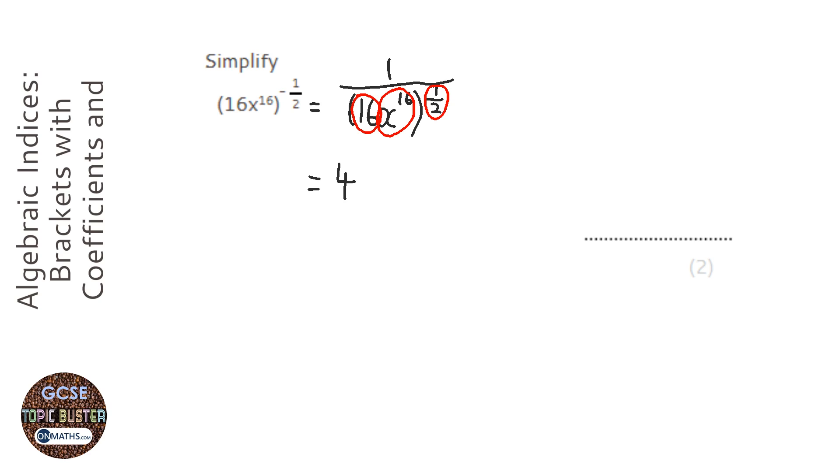Now, what we're doing with the x to the power of 16, if you remember your rules, if you've got a number inside a bracket and a number outside the bracket, you multiply them together. So it's going to be x to the power of 8.